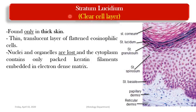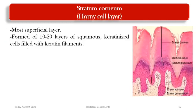Layer four is the stratum lucidum, also called the clear cell layer. It is important to know that it is present only in thick skin — this is a key difference between thick and thin skin. It appears as a translucent acidophilic layer formed of flattened cells. Here the cells start to lose their nuclei and organelles and are backed only by keratin filaments embedded in an electron-dense matrix.